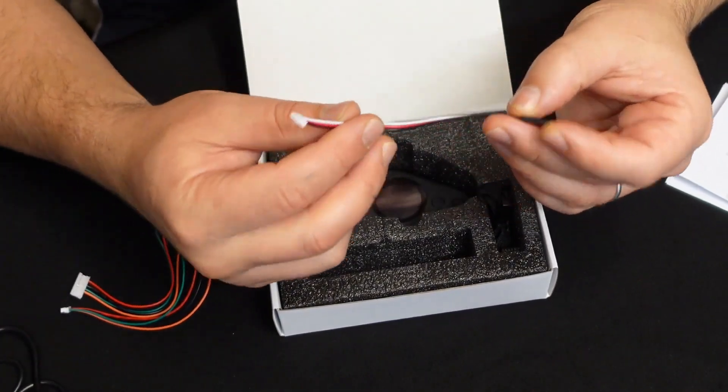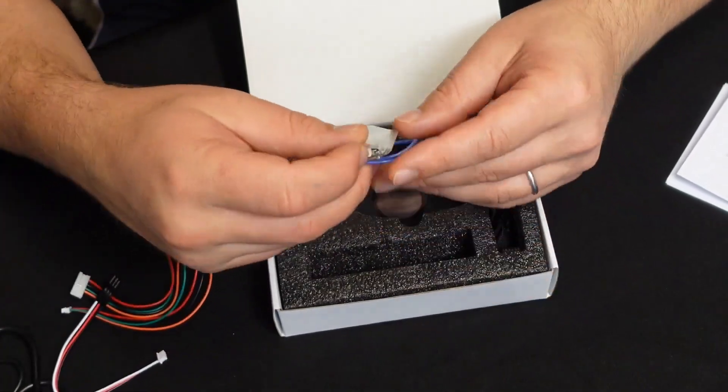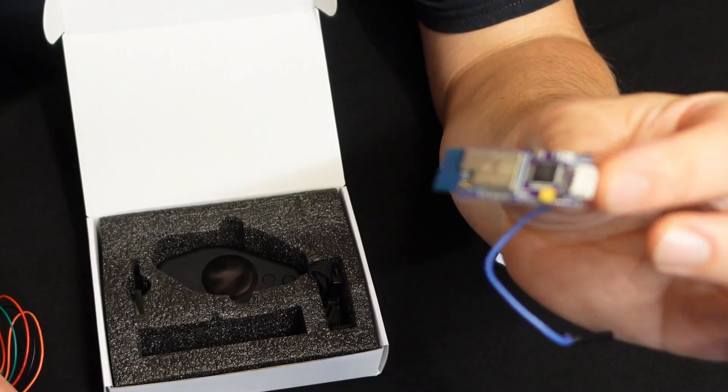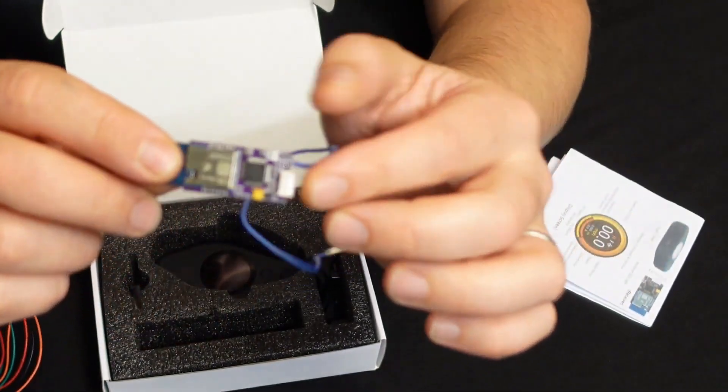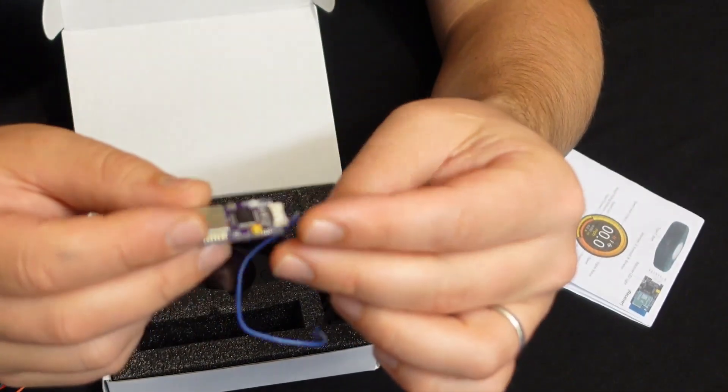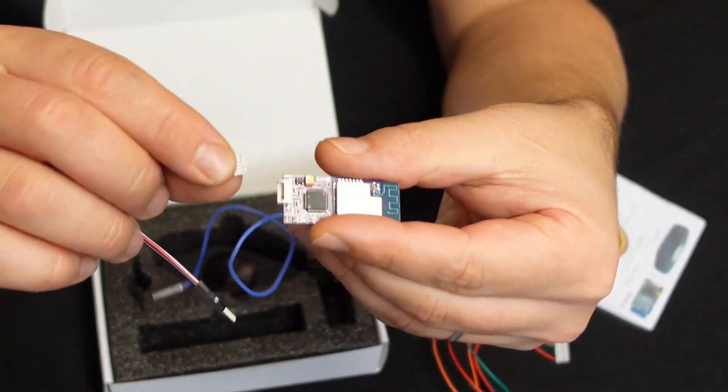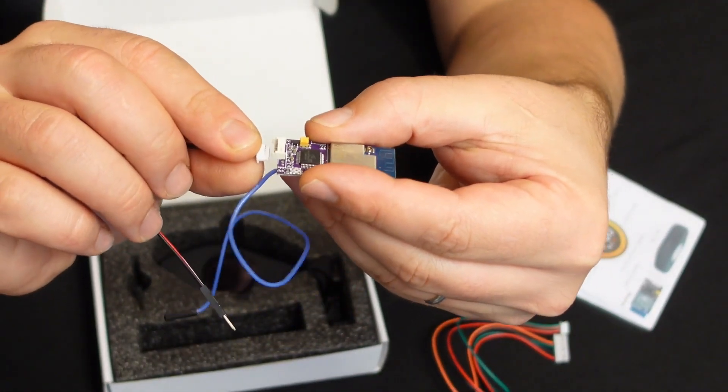You do also get the PPM remote. You do get the receiver. This is what's going to go inside your ESC enclosure and this is going to get plugged in via this cable right here into your ESC.